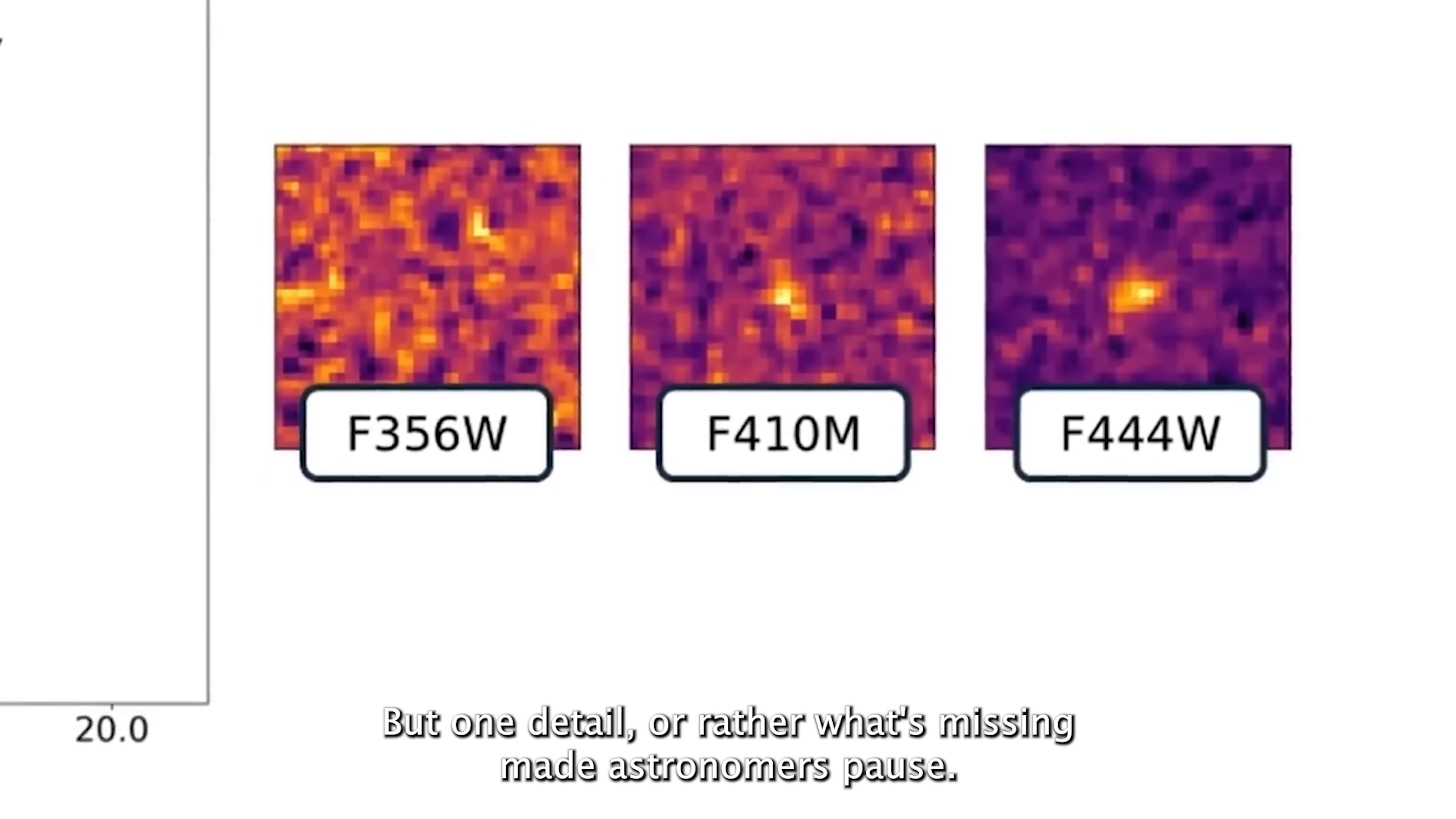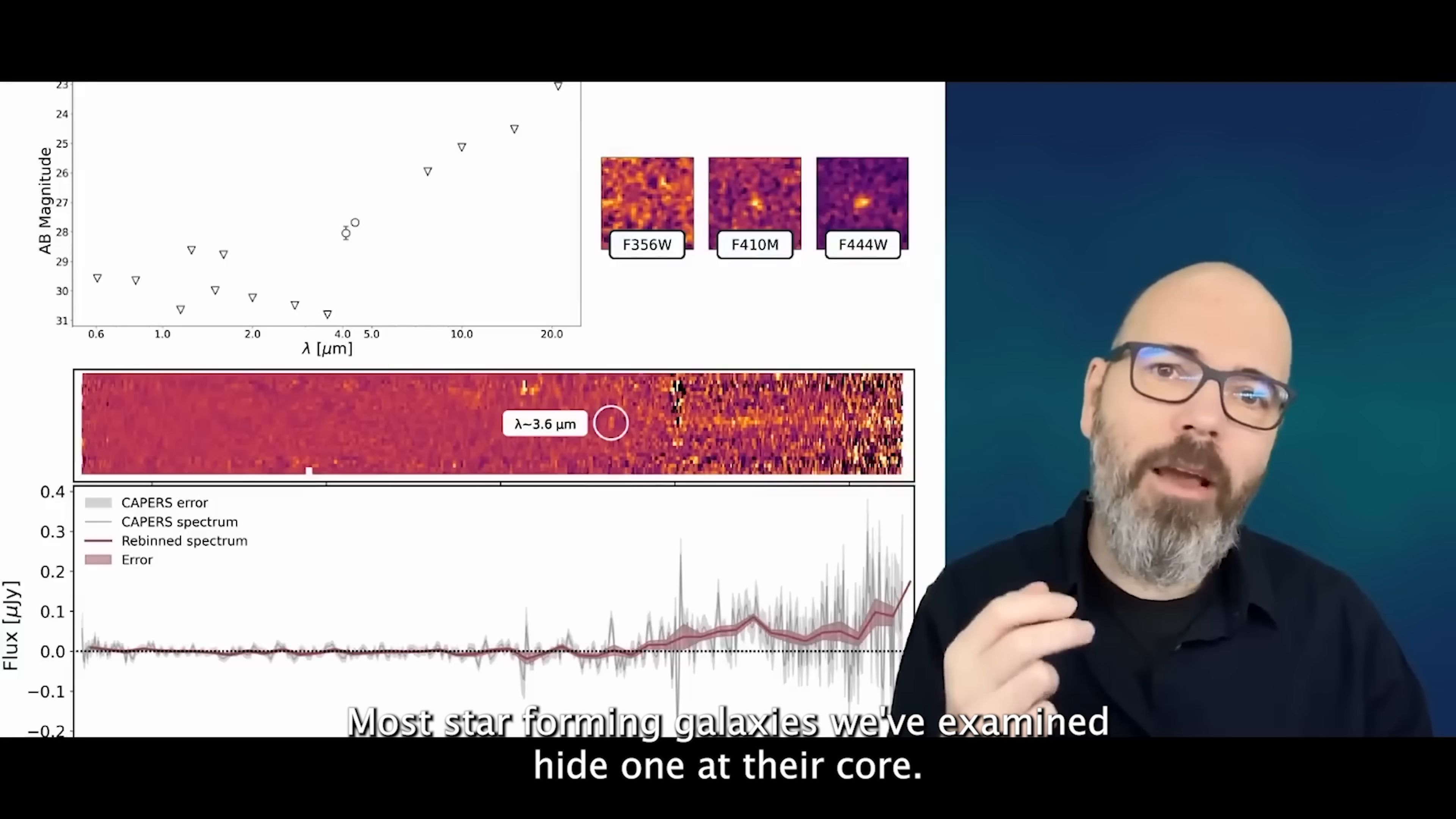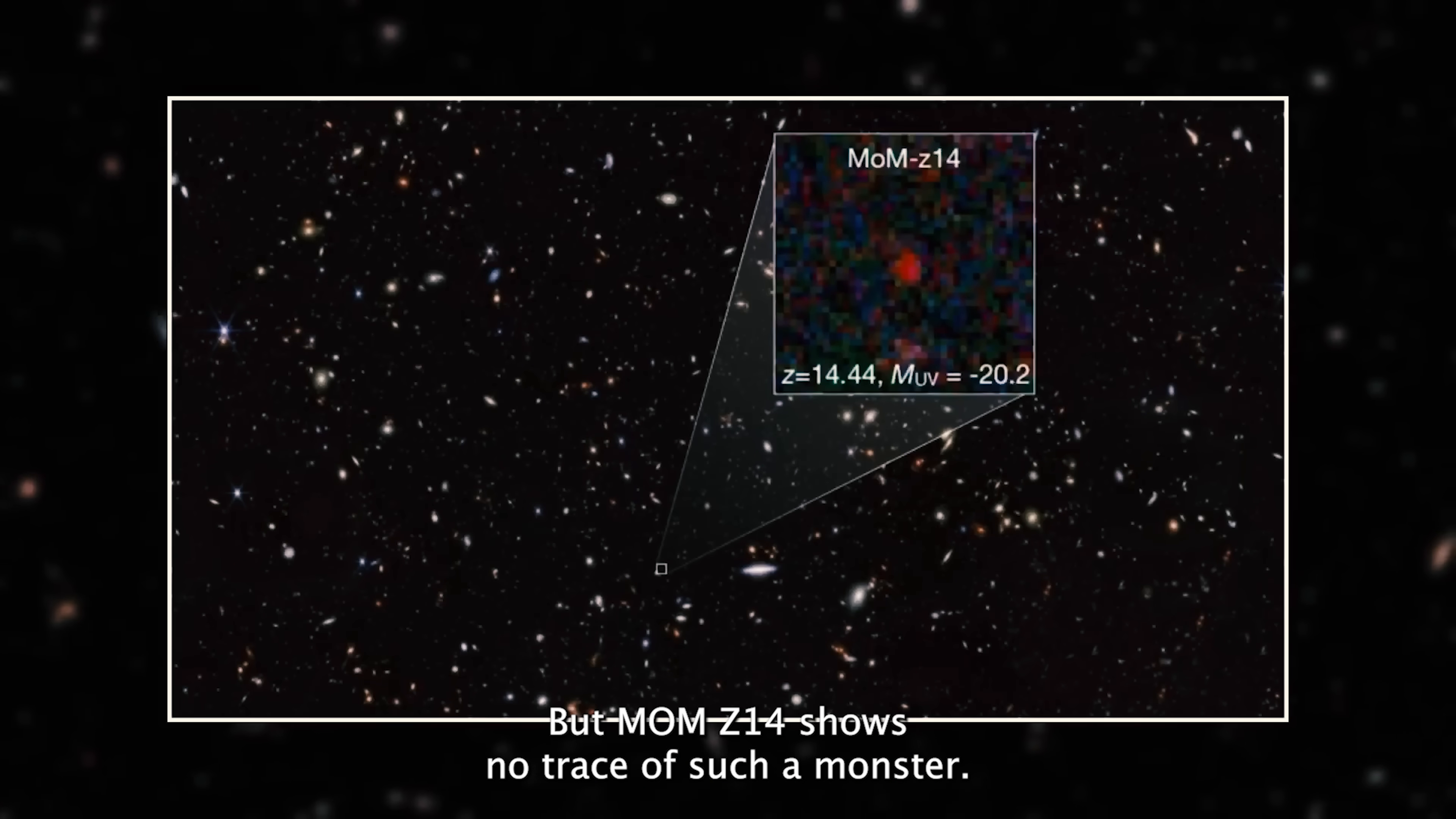But one detail, or rather what's missing, made astronomers pause. There's no evidence of a supermassive black hole. Most star-forming galaxies we've examined hide one at their core. These giants shape how galaxies grow, sculpting their structure and influencing when stars ignite or fade. But MomZ 14 shows no trace of such a monster.